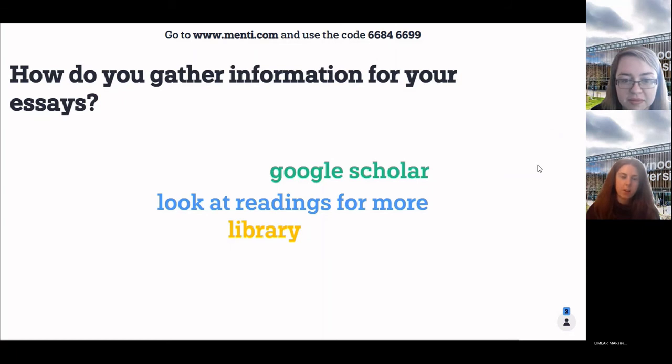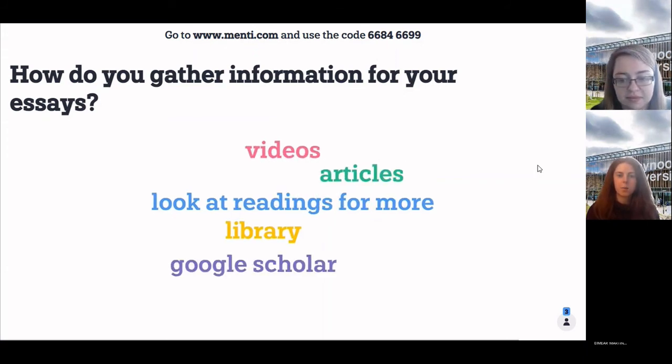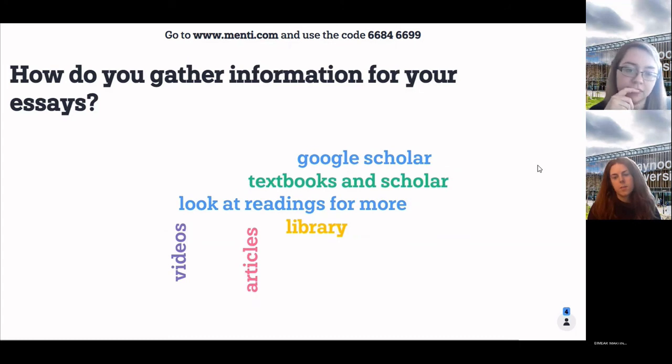Google Scholar, brilliant. Look at readings for more. Brilliant. Library. I know when I was in first year, I used to always go to the library and the books because I feel like that was the thing, that's what I thought I had to do, get books out. I think researching online seems so much more daunting than going to a book, but it is brilliant going online. It's a really quick way to do a large, get an overview of the kind of research out there. Videos, articles, great. Brilliant. I suppose depending on the department that you're in, you might have access to different databases as well for your subjects of choice and things like that. Google Scholar is always a very safe bet as well. It has nearly everything on it, which is great.